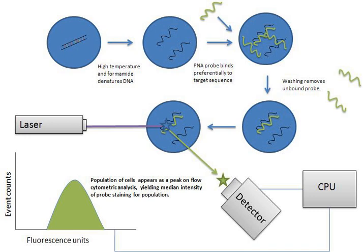Modern instruments usually have multiple lasers and fluorescence detectors. The current record for a commercial instrument is 10 lasers and 30 fluorescence detectors. Increasing the number of lasers and detectors allows for multiple antibody labeling and can more precisely identify a target population by their phenotypic markers. Certain instruments can even take digital images of individual cells, allowing for the analysis of fluorescent signal location within or on the surface of cells.